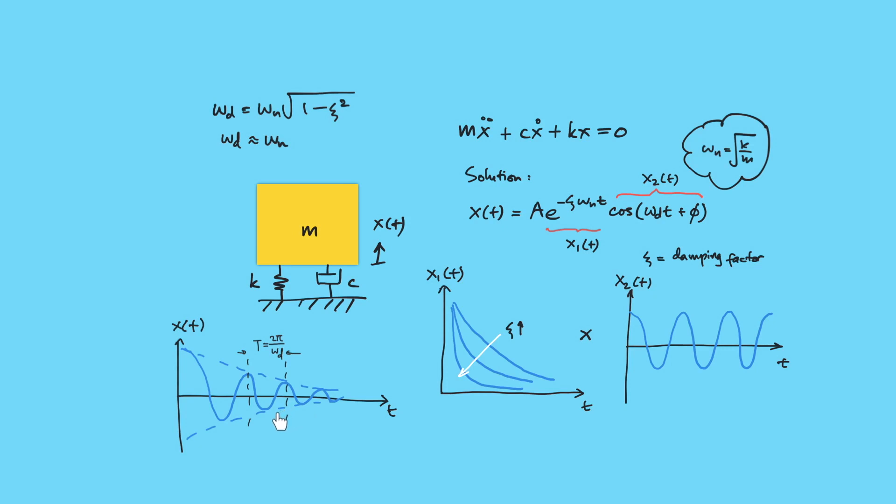Okay guys, in the next video we will do the other way around. Say if we have already the decay graph for example from the measurement, how we can extract the information of damping factor zeta from that graph. Alright, see you again then.